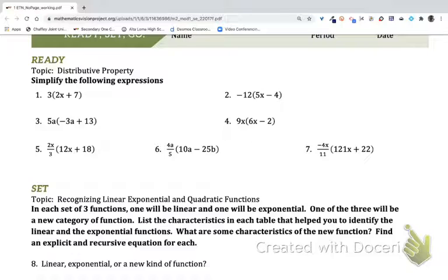Here are some tips to be able to get through the even problems for the Ready, Set, Go for this work. For the first set, we're talking about the distributive property, which means that when we have something outside of a parentheses, we're going to distribute it to everything inside the parentheses. I'm going to multiply whatever is outside the parentheses into every term inside the parentheses. Let's go ahead and do that.